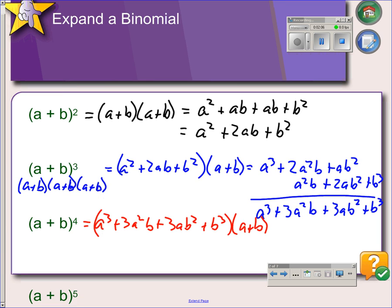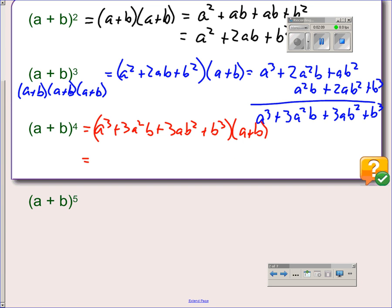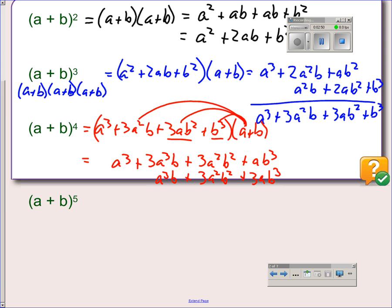If we do this, we get a⁴, and then a times 3a²b is 3a³b. Then multiplying times 3ab² gives us 3a²b². Multiplying a times b³ gives us ab³. Then we distribute the b through there. b times a³ is a³b, b times 3a²b is 3a²b², multiplying by 3ab² gives us 3ab³, and then multiplying by b³ gives us b⁴, and we can add that up.